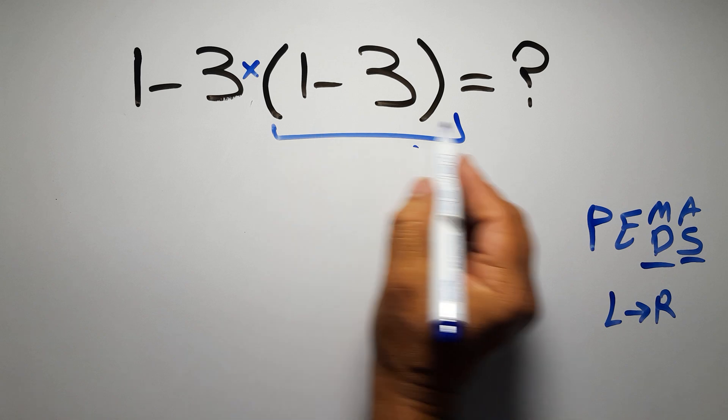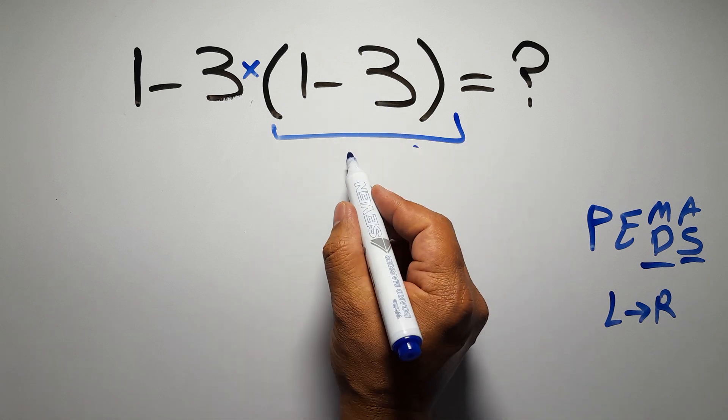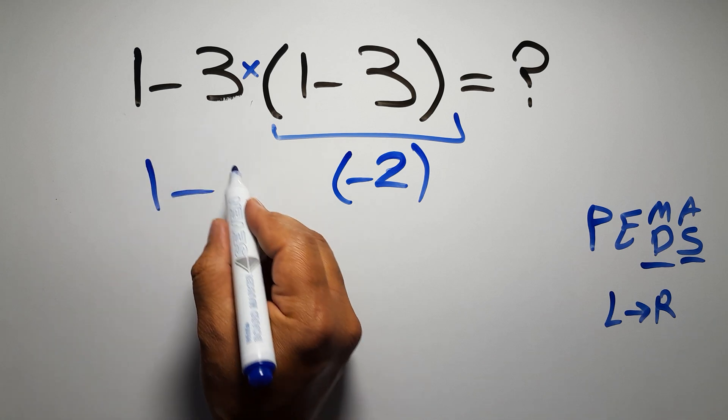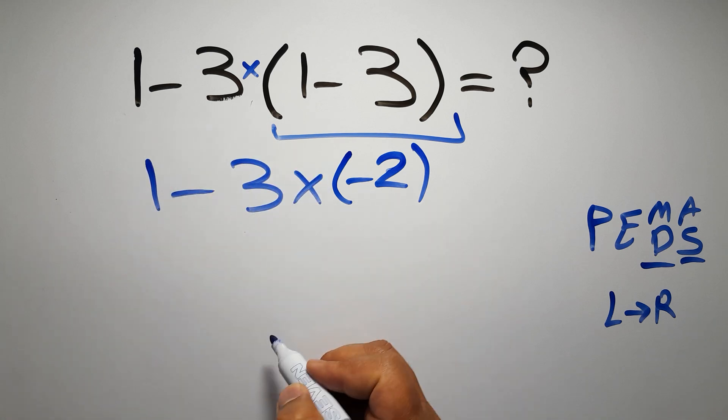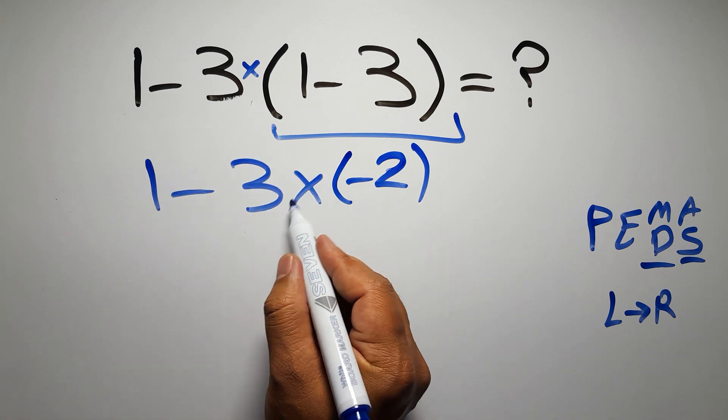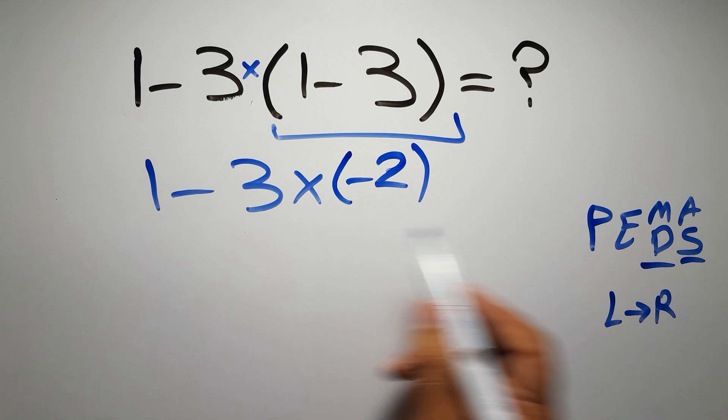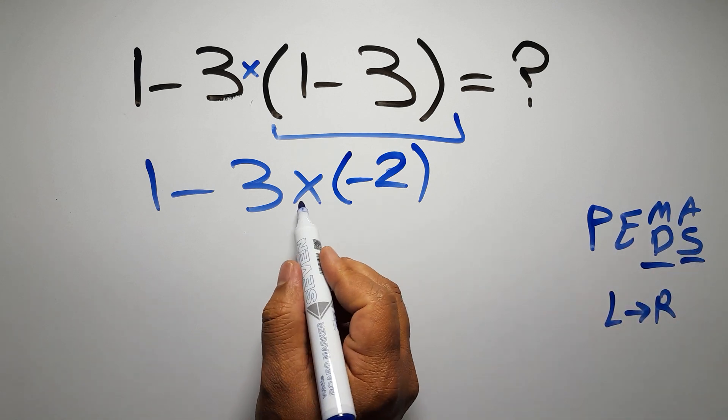So first this parentheses: 1 minus 3 gives us negative 2, so 1 minus 3 times negative 2. Now we have one subtraction and one multiplication. According to PEMDAS, multiplication comes before subtraction, so here first we have to do this multiplication.